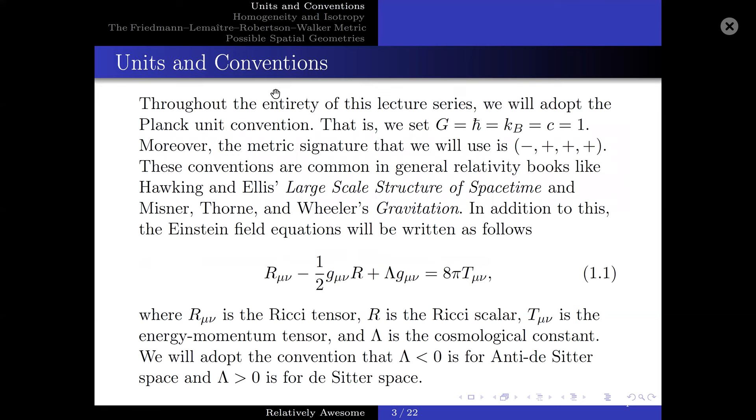Throughout the entirety of this lecture series, we will adopt the Planck unit convention. That is, we set Newton's constant, Planck's constant, Boltzmann's constant, and the speed of light to 1. Moreover, the metric signature that we will use is the minus plus plus plus signature. These conventions are common in general relativity books like Hawking and Ellis' Large Scale Structure of Spacetime and Misner, Thorne, and Wheeler's Gravitation. In addition to this, the Einstein field equations will be written as follows,